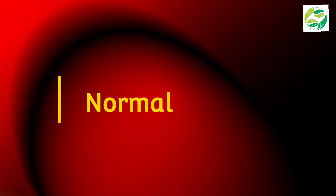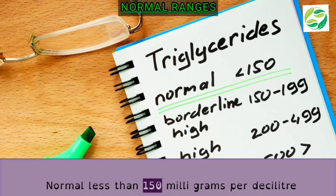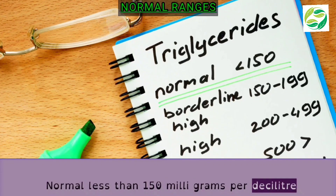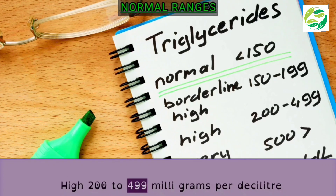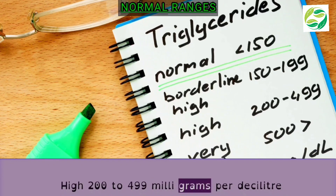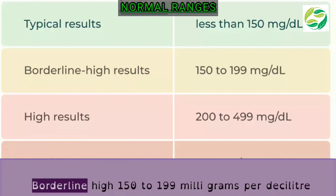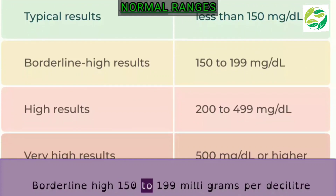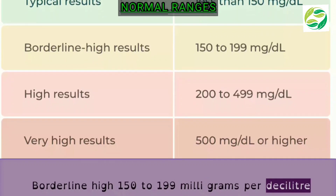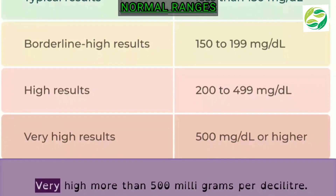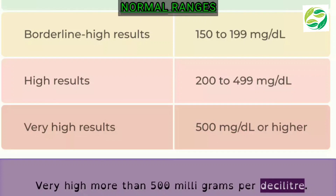Normal ranges: Normal is less than 150 mg per deciliter. Borderline high is 150 to 199 mg per deciliter. High is 200 to 499 mg per deciliter. Very high is more than 500 mg per deciliter.